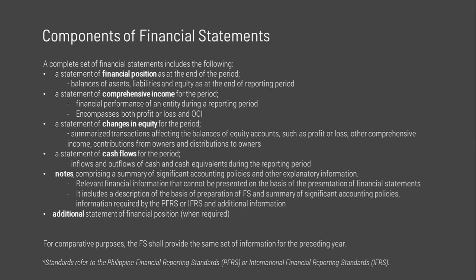The statement of financial position shows the entity's financial condition — its status of assets, liabilities, and equity — as at a certain date. It includes line items presenting the following amounts: PPE, investment property, intangible assets, financial assets, investments accounted for using the equity method, biological assets, inventory, trade and other receivables, cash and cash equivalents, assets held for sale including disposal groups, trade and other payables, provisions, financial liabilities, current tax liabilities and assets, deferred tax liabilities and assets, liabilities included in disposal groups, non-controlling interests, and issued capital and reserves attributable to owners of the parent.